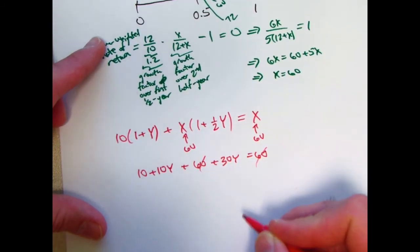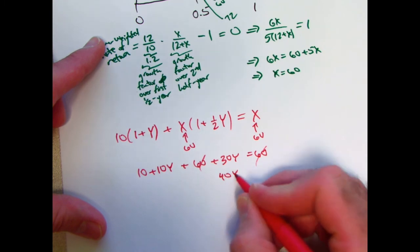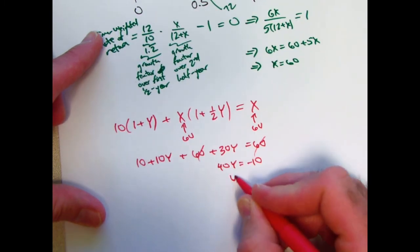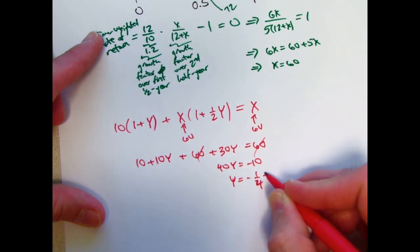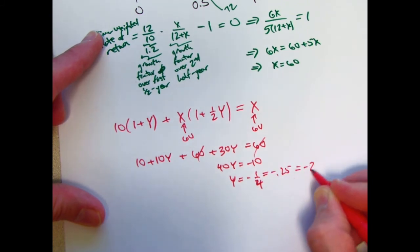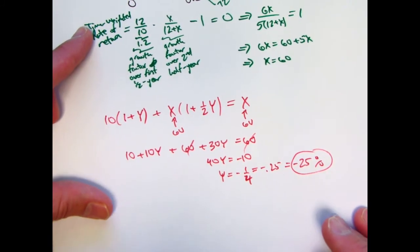Those 60s will cancel. We're going to have 40y equals negative 10. So y is negative one-fourth, negative 0.25. In other words, a negative 25% dollar-weighted or money-weighted rate of return.